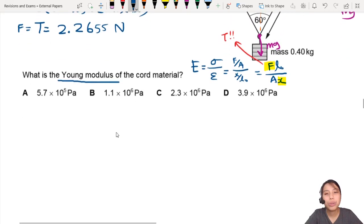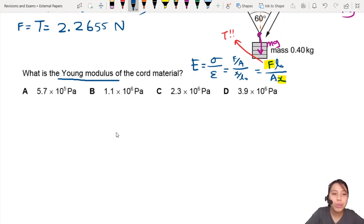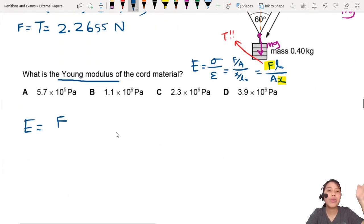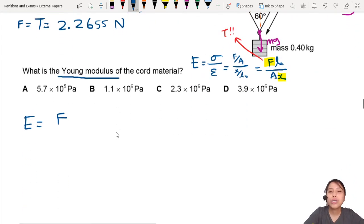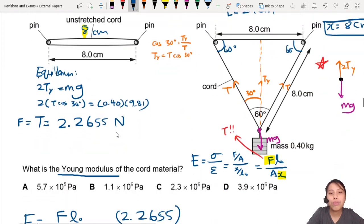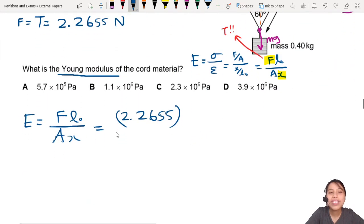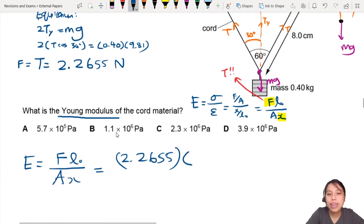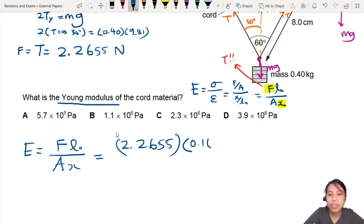Let's do our calculation for Young's modulus. Force, which is the tension acting along the whole string, times L0 over A·X. That will be 2.2655, we already times 2 up there to account for both sides because 2·Ty. Original length: 16 cm, let's convert it to 0.16 meters.